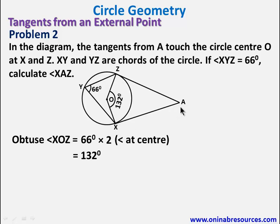So this angle is 132 degrees. Since AX and AZ are tangent from external point, AX and AZ are equal. And this angle here is 90. This is 90. AXO is equal to AZO, which is 90 degrees because OX is perpendicular to AX, and OZ is perpendicular to AZ.